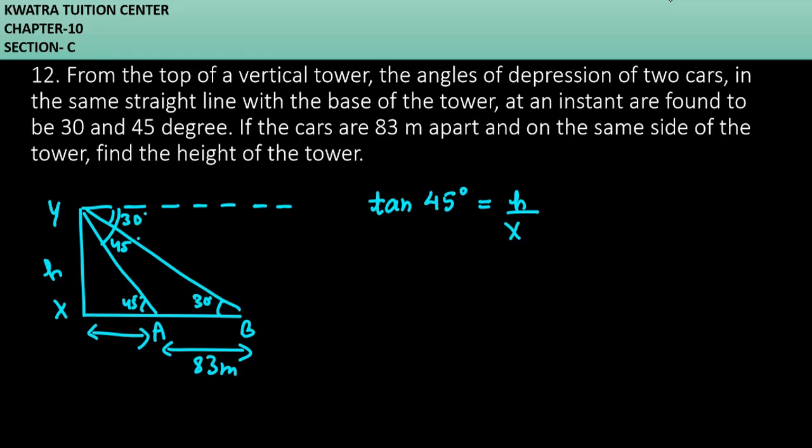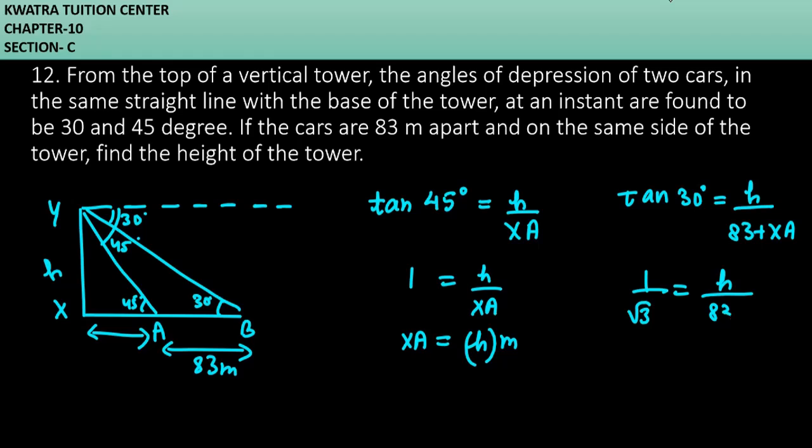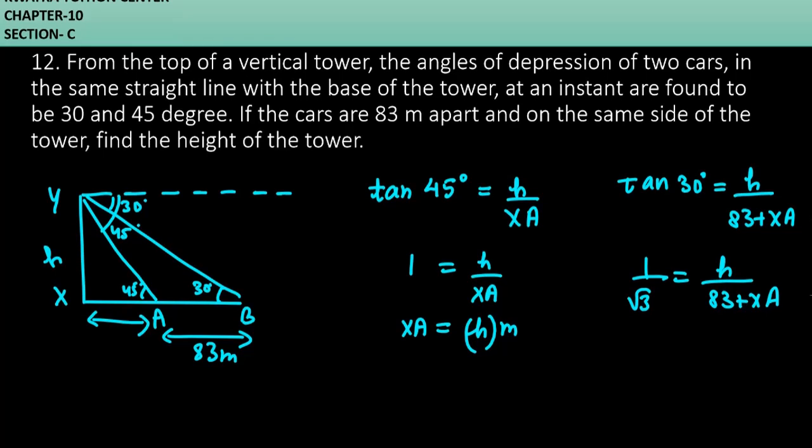Tan 45 is 1, so h over xa equals 1. You can take xa to the left side - xa equals h meter. Now what you can do next is use the other triangle. Tan 30 equals perpendicular over base, h over 83 plus xa. We can easily find the value of h and xa. We'll find h using these two.